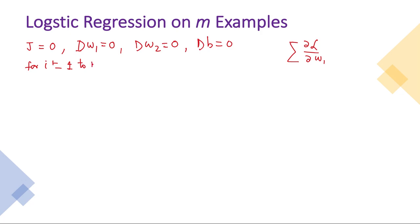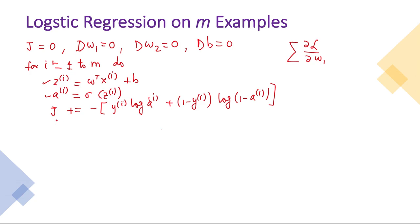Now for i equal to 1 to m, do what? We will calculate z i equal to w transpose xi plus b. Then a i will be sigmoid of z i. Once we have done that, let's add the loss to the accumulator. The loss is defined as y i log a i plus 1 minus y i log 1 minus a i.